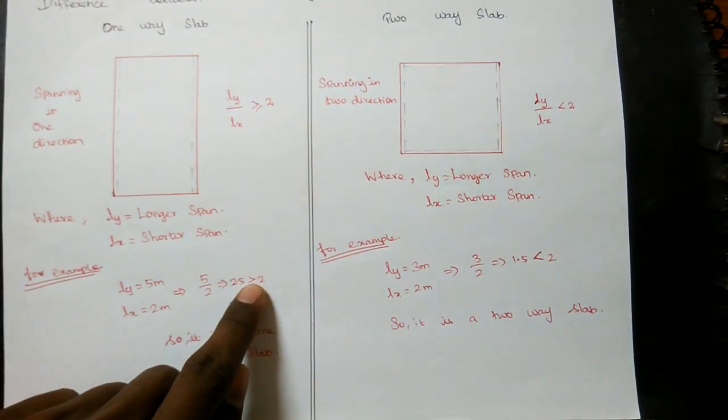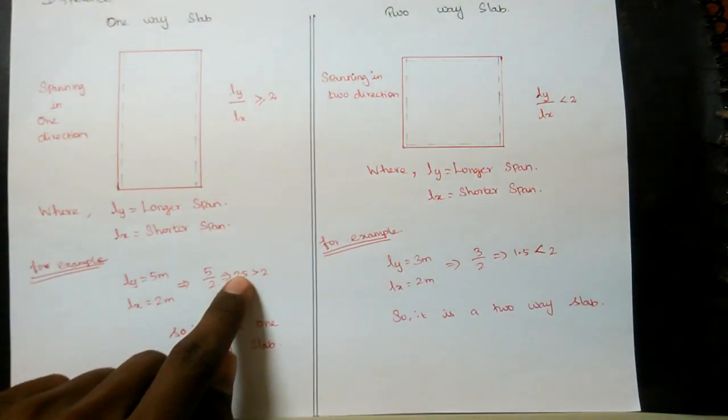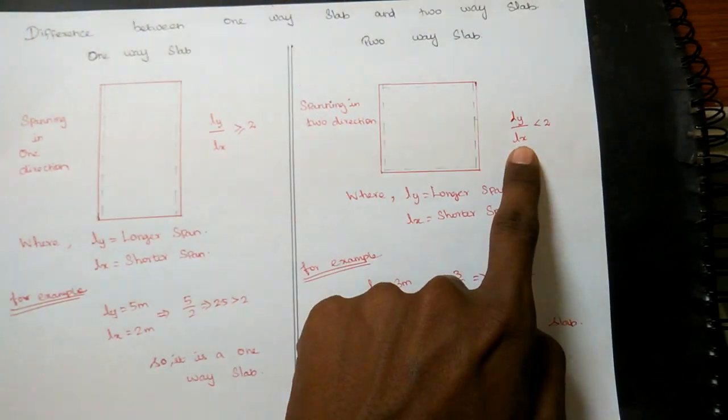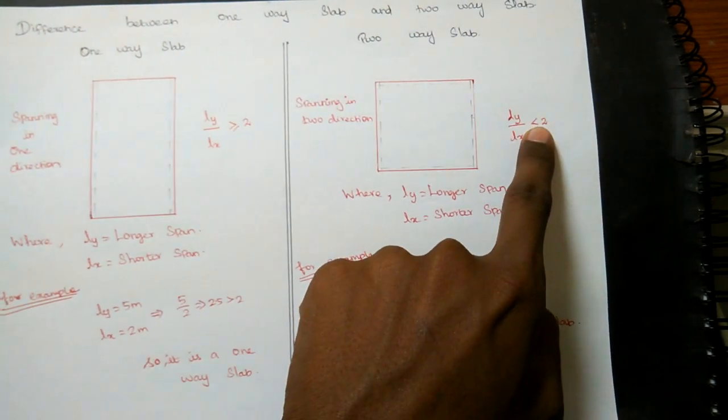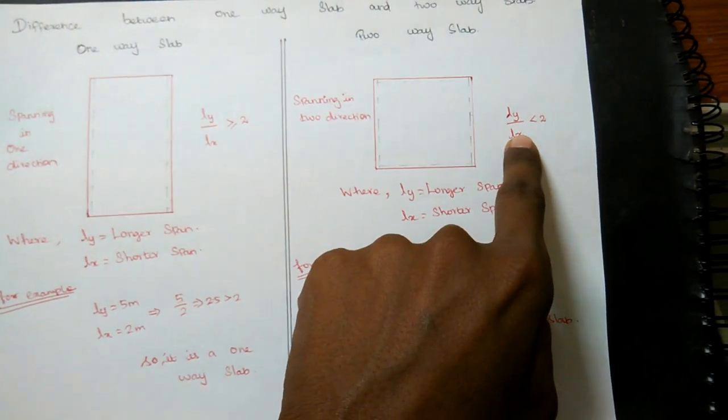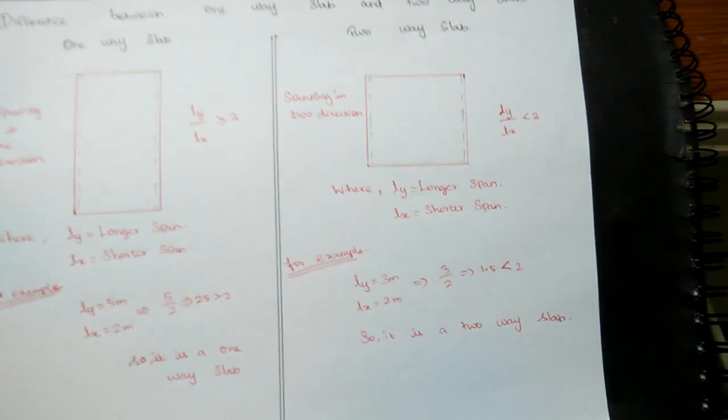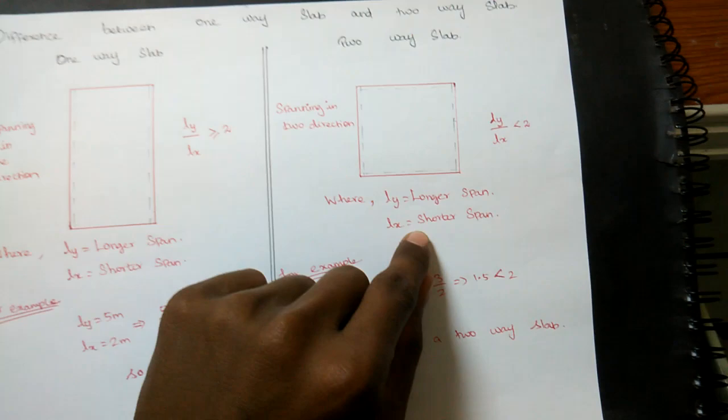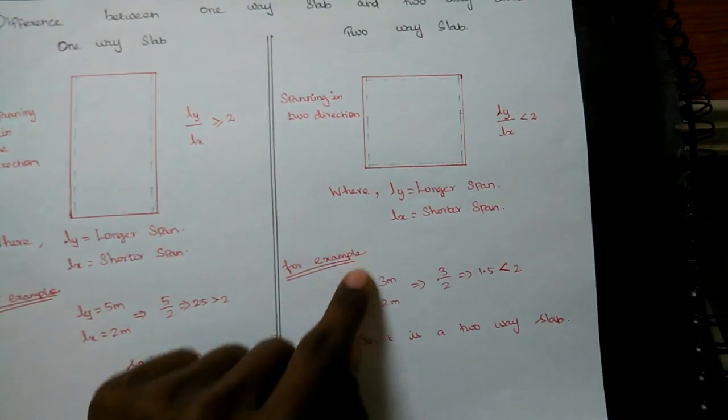This is a One-Way Slab, this is a Two-Way Slab, this is a Two-Way Slab.